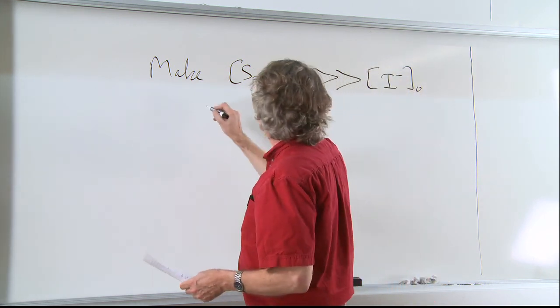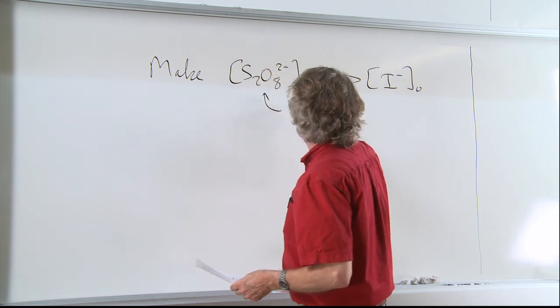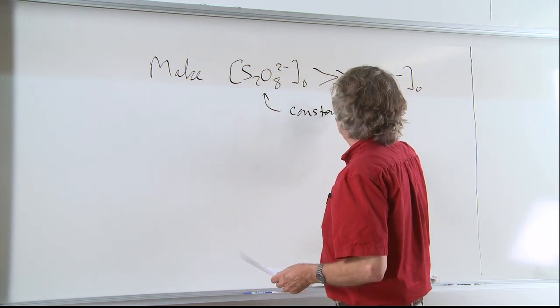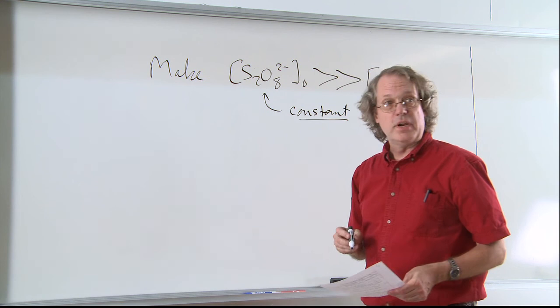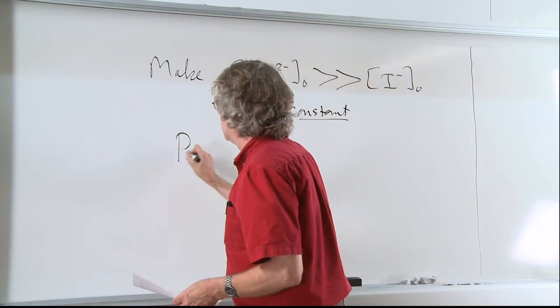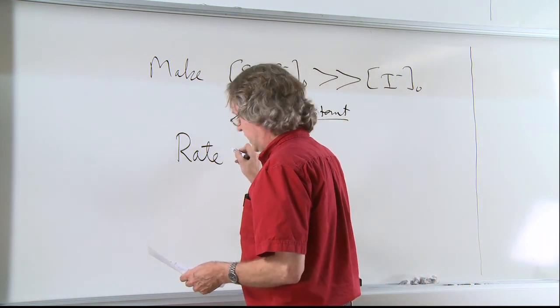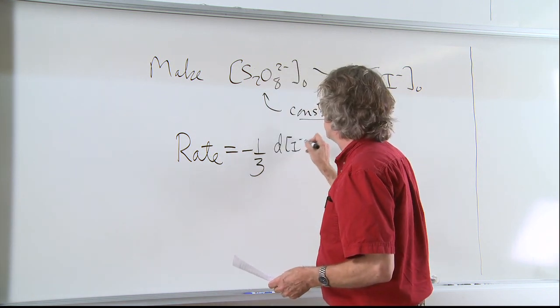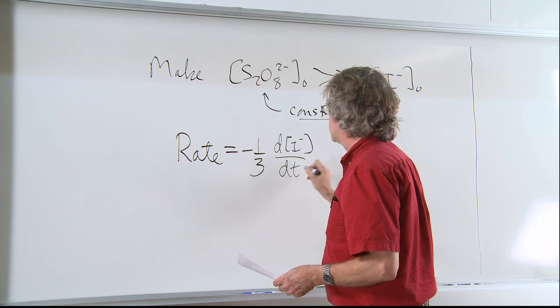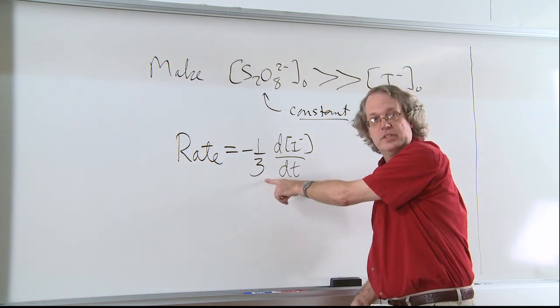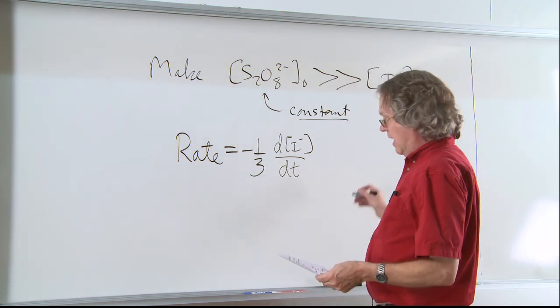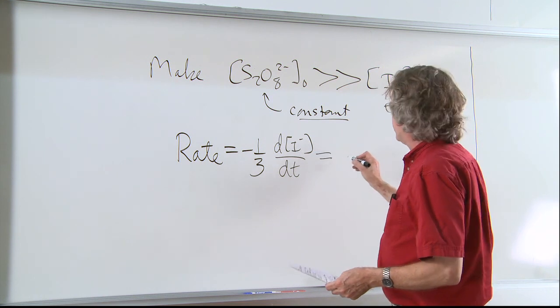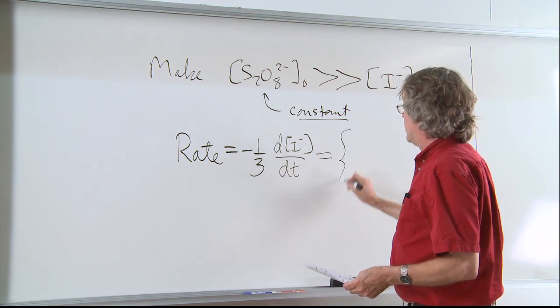So what that means then is that this will remain constant or effectively constant throughout the reaction. So if I write my rate law, which I can now write in terms of the change in the concentration of my reactant iodide with respect to time, I put in a factor of a third to take account of the stoichiometry. This now becomes the rate constant, which we had before,